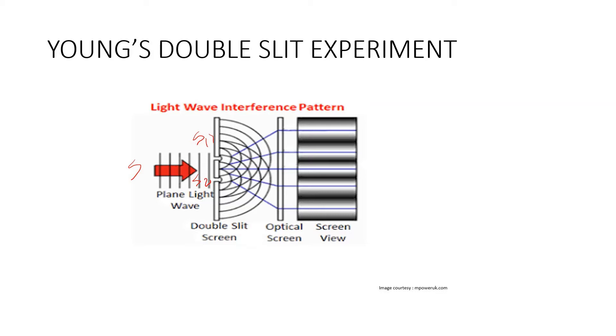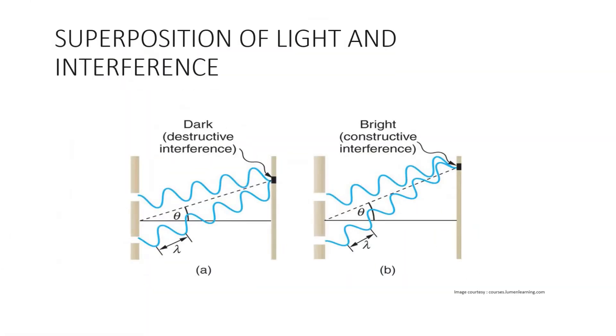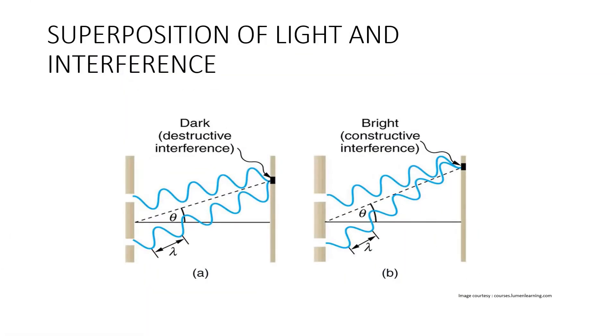If two waves superimpose with each other in the same phase, the amplitude of the resultant is equal to the sum of the amplitudes of the individual waves resulting in the maximum intensity of light.